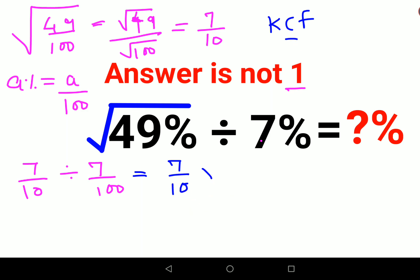C stands for changing the division sign to multiplication and then we have to F. F stands for flipping the next number. Flipping or reciprocal of 7 upon 100 is 100 upon 7.